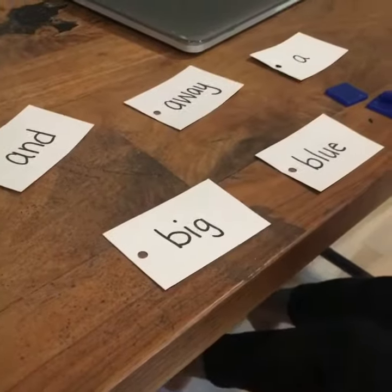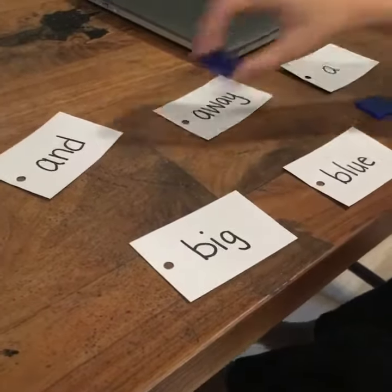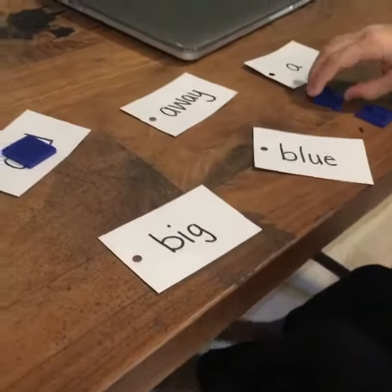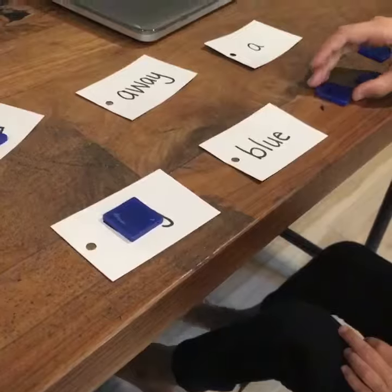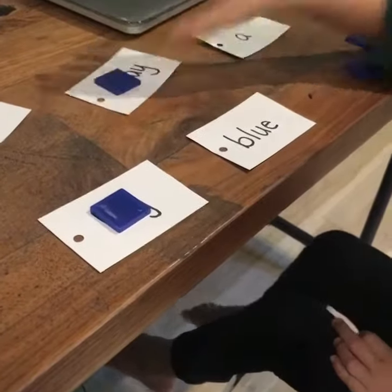All right. Put the blue chip on the word and. Good girl. Put the blue chip on the word big. Good girl. Put the blue chip on the word away. Very good.